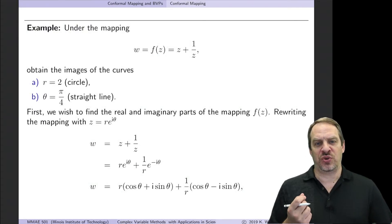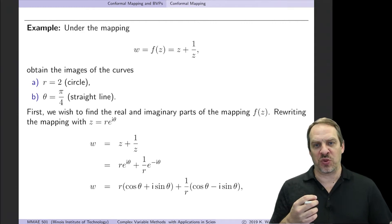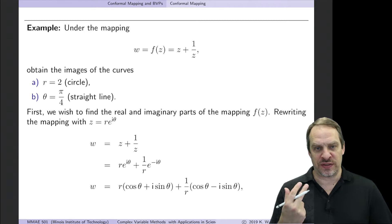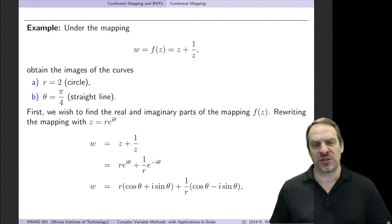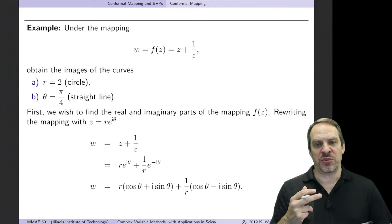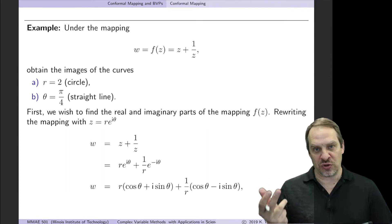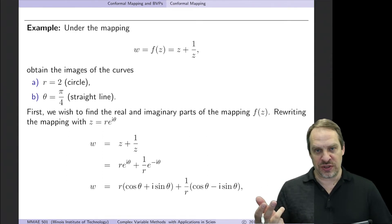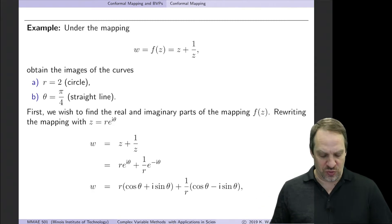In the previous video, we answered the question: what mathematically has to be true for a mapping to be one-to-one? We found there are two requirements. The first is it has to be analytic — f(z) has to be analytic, therefore satisfying the Cauchy-Riemann equations. And secondly, f'(z) has to be non-zero. Critical points where it equals zero are points where it's not one-to-one.